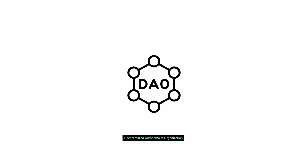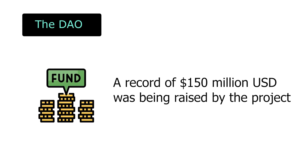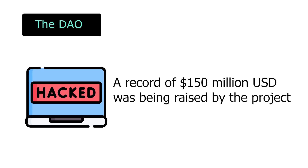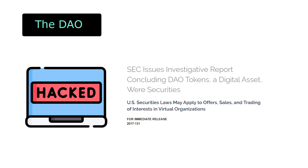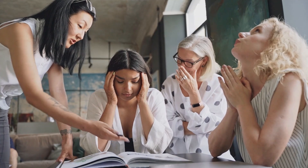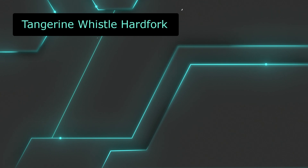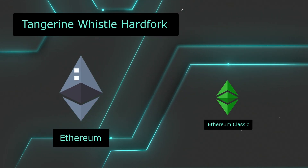Subsequently, a decentralized autonomous organization called the DAO — essentially a set of smart contracts — was developed in 2016 on the platform. The project managed to raise a record of $150 million in a crowd sale. Unfortunately, the DAO was exploited in June 2016 when $50 million of DAO tokens were stolen by an anonymous hacker, which eventually caused a split within the Ethereum community. It broke off into two blockchains: the Ethereum we know today and Ethereum Classic.